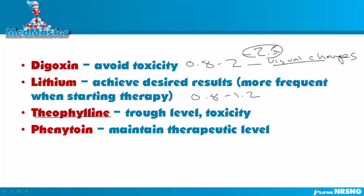Theophylline is a drug that is not given incredibly regularly nowadays. However, it's important to know because it has serious side effects and is tested often. We're looking at 10 to 20 for the therapeutic level. We usually check a trough level — drawn before the next dose is given — and based on that we can adjust dosage. If the level is 18, we could decrease the dose; if it's 8, we could increase it. It also helps monitor toxicity.